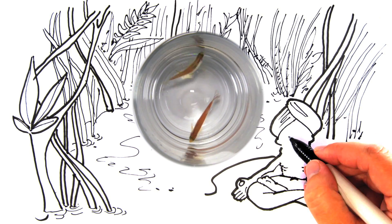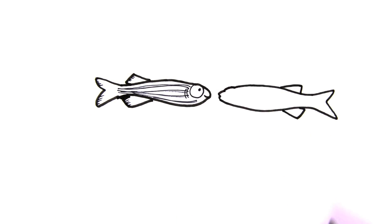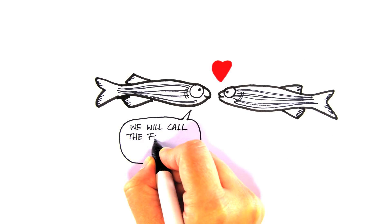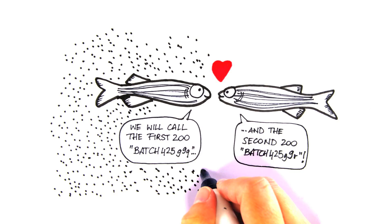For drug discovery, zebrafish themselves are not that interesting, but their offspring are. A zebrafish pair generates about 200 eggs per week, which hatch within two to three days to give zebrafish larvae.